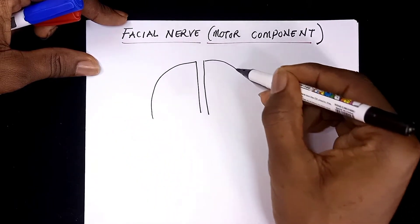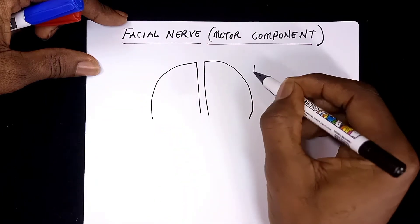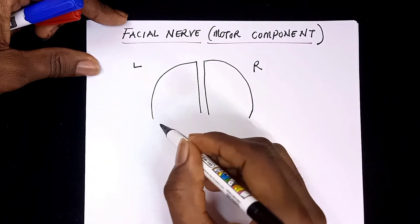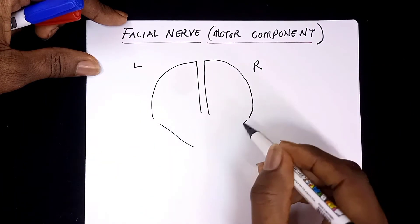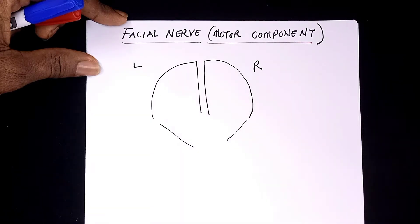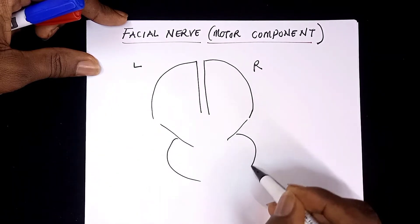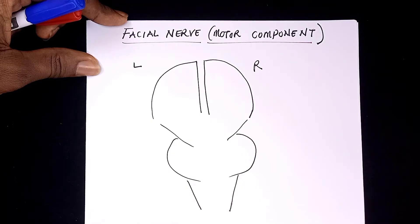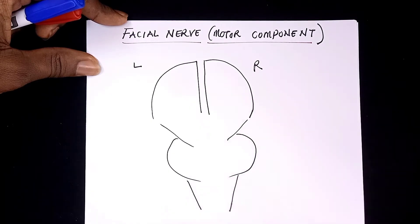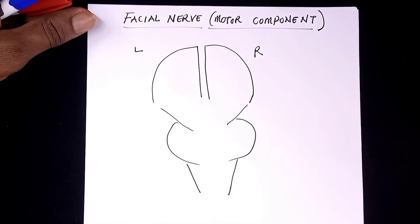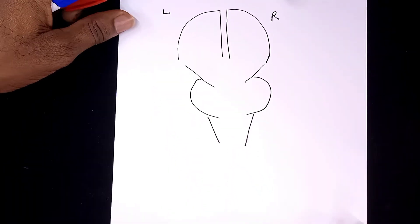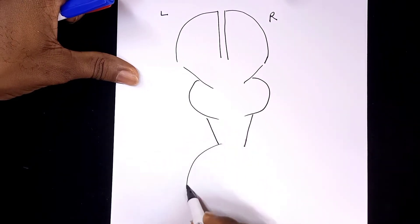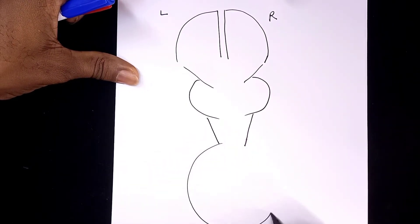This will be the right part of the brain and this will be the left part. Let's quickly put here the midbrain, and then the pons. This will continue as the medulla, and the medulla will continue as the spinal cord. Now to top up our diagram, let us draw a smiley face complete with eyes and a mouth.